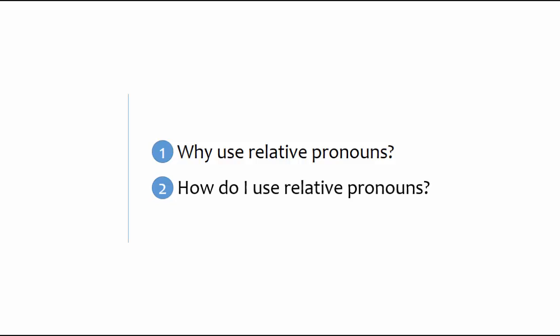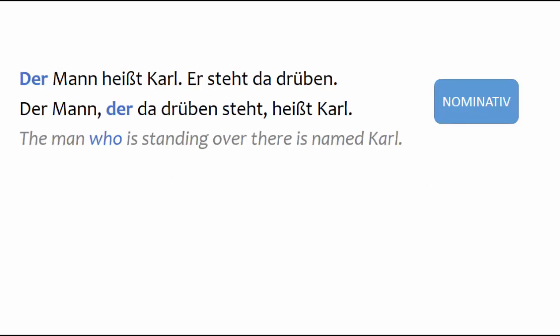Now let's explore how to use relative pronouns. You'll find that it's quite simple. Relative pronouns are based on the direct articles der, die, and das. For example, in the sentence 'Der Mann, der da drüben steht, heißt Karl,' the relative pronoun 'der,' equivalent to English 'who,' is exactly the same as the article 'der' in 'Der Mann heißt Karl.'